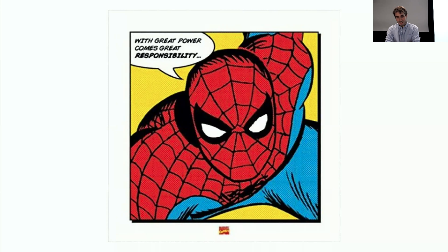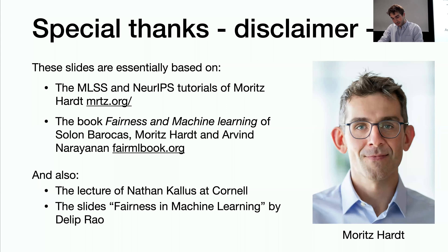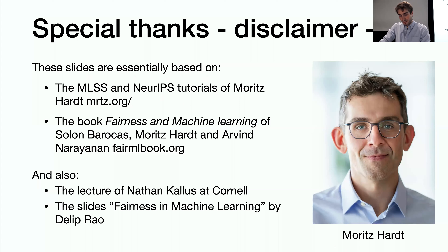Machine learning and artificial intelligence give you great power, but that also comes with responsibility — that's why we created this new lecture. I really want to thank Moritz Hardt, one of the best researchers in the field, a professor at Berkeley who will move soon to the Max Planck Institute. Today's lecture is largely based on his tutorials at the Machine Learning Summer School and NeurIPS 2017, and on his amazing book 'Fairness in Machine Learning,' co-authored with Barocas.